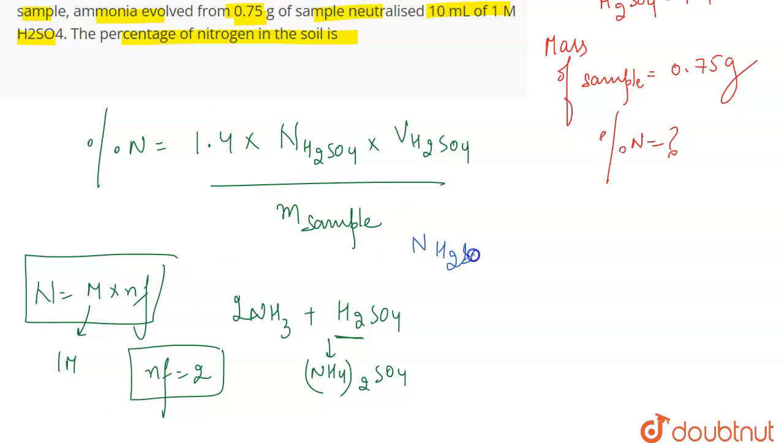As n-factor is 2, it means that the normality of H2SO4 will be: molarity is 1 times n-factor is 2, which is 2 normal. This will be the normality.